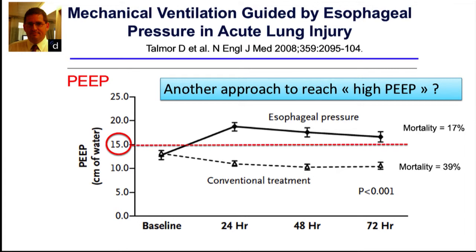Another approach, evoked by Liz and Mathieu, comes from the group of Dean Talmor in Boston. Every patient is different because the respiratory mechanics are different. He approached the lung by evaluating pleural pressure through esophageal pressure and tried to maintain transpulmonary pressure — airway pressure minus esophageal pressure — not negative but positive, titrating PEEP accordingly. In these studies, the group managed by esophageal pressure-guided PEEP — often set above 5 cmH2O — showed a mortality reduction from 39% to 17%.